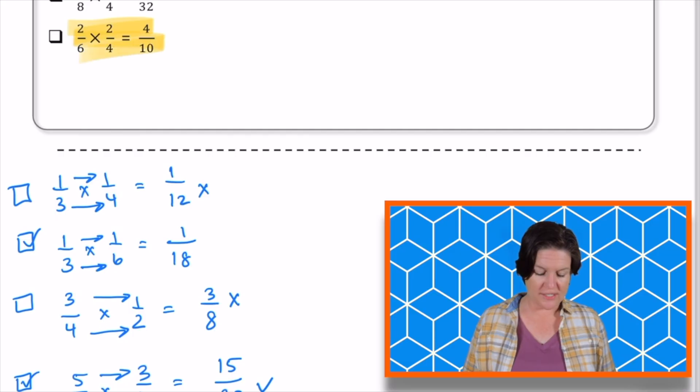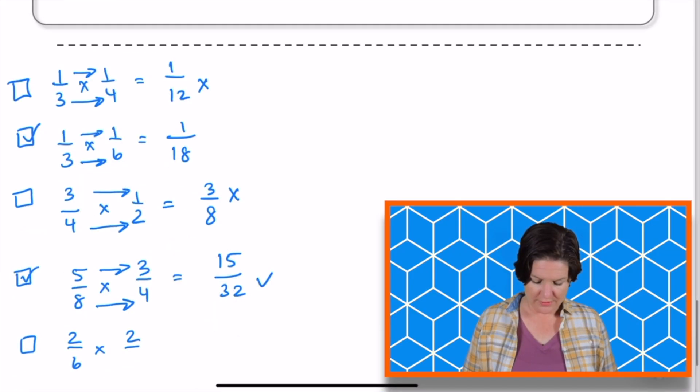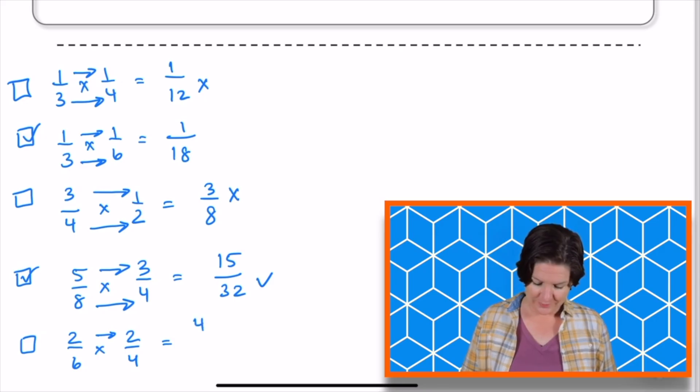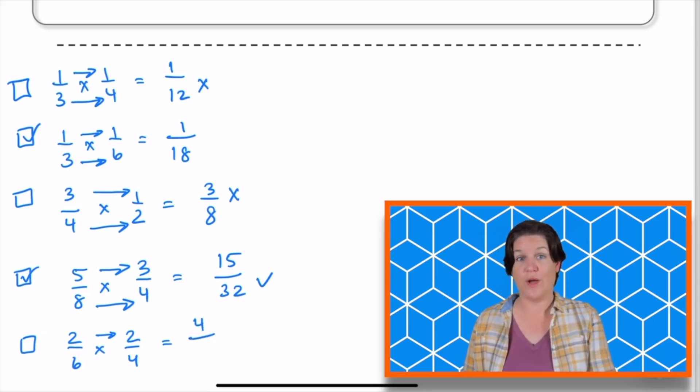All right, and our last one is 2/6 times 2/4. Let's see if that is 4/10. 2/6 times 2/4. 2 times 2 equals what?